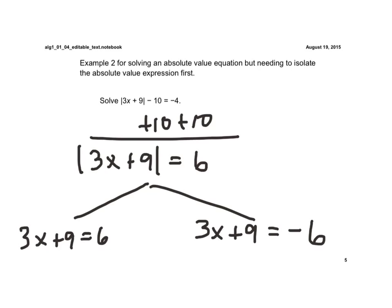And now we solve these two equations. These are both two-step equations. So I'm going to subtract the 9. I get 3x is equal to a negative 3, divided by 3, and x is equal to a negative 1.